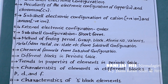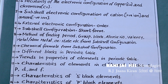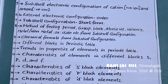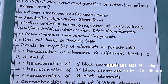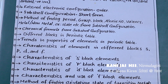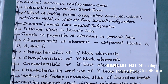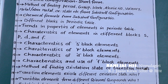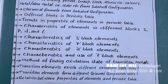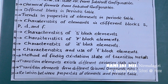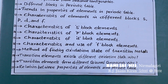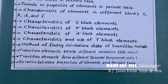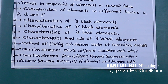Finding period, group, block, valency, atomic number, whether metal or non-metal, and oxidation state from sub-shell configuration. Chemical formula from sub-shell configuration. Different blocks in the periodic table, trends in properties of elements, and characteristics of elements in different blocks: s, p, d, f. Characteristics of s-block, p-block, d-block, and f-block elements. Method of finding oxidation state of transition elements or metals. Transition elements exhibit different oxidation numbers — why? Transition elements form different colored compounds — why? Relation between properties of elements and the periodic table.